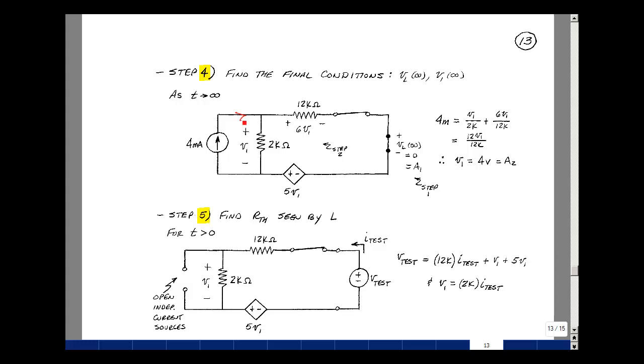All right, let's sum the currents of this node. So 4 milliamps is entering. What's leaving is v1 divided by 2k, and what's leaving is v1 times 6 divided by 12k. Our common denominator here would be 12. Let's multiply this by 6 over 6 times 2. So I'll get 6v1 plus another 6v1. So I get 12v1 divided by 12k. The 12s cancel. I can multiply the 1k times the 1 milli, and I get 4 volts is equal to v1. And again, that's going to be equal to a2 plus b2 times e to the minus infinity. So just a2. So now I can solve for my bs.